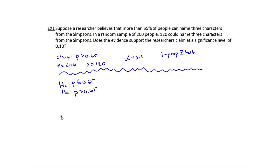It's under Stat and Test, just like before, and what I'm looking for is a one-prop z-test. Once I get in there, the first thing it asks for is p-naught, which from your hypothesis test is 0.65. Then the number of successes, x, is 120, out of the sample n of 200. Then it wants to know what tail test — this is a right-tail test — and I go down to calculate.